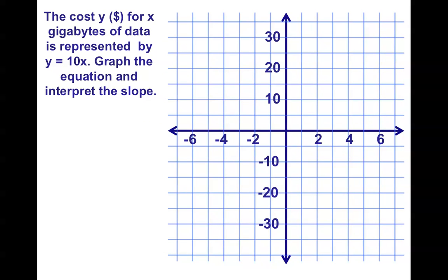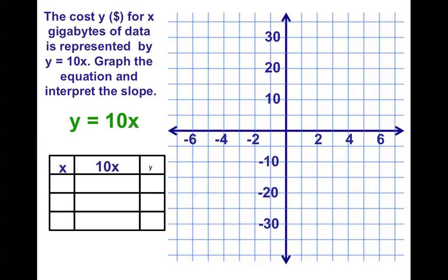The cost y dollars for x gigabytes of data is represented by y equals 10x. Can you think of what the slope's going to be? Graph the equation and interpret the slope. So we graph just like we did in section one. Pick three points. Pick the easiest points you can think of. Zero, one, and two are my favorites. And we have a straight line.